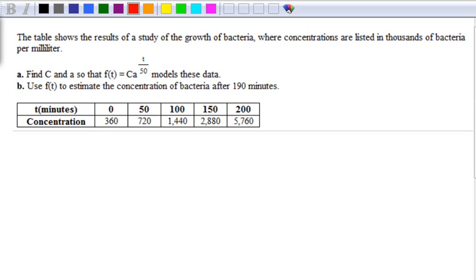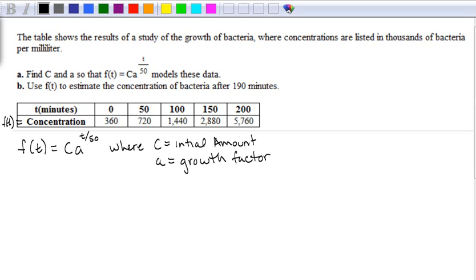So let's go ahead and write down the formula. Now we know that t represents minutes, f(t) represents the concentration, C represents the initial amount, and A represents the growth factor. If it was decreasing, A would represent the decay factor.